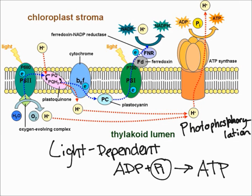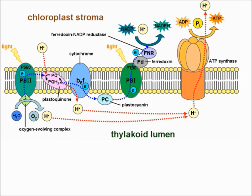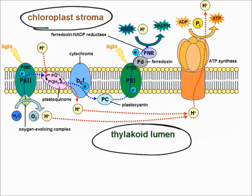This diagram here is going to help explain what essentially occurs. Just to get an idea of where this is occurring — down here is the thylakoid lumen, up here is the chloroplast stroma, and this is the membrane of the thylakoid.